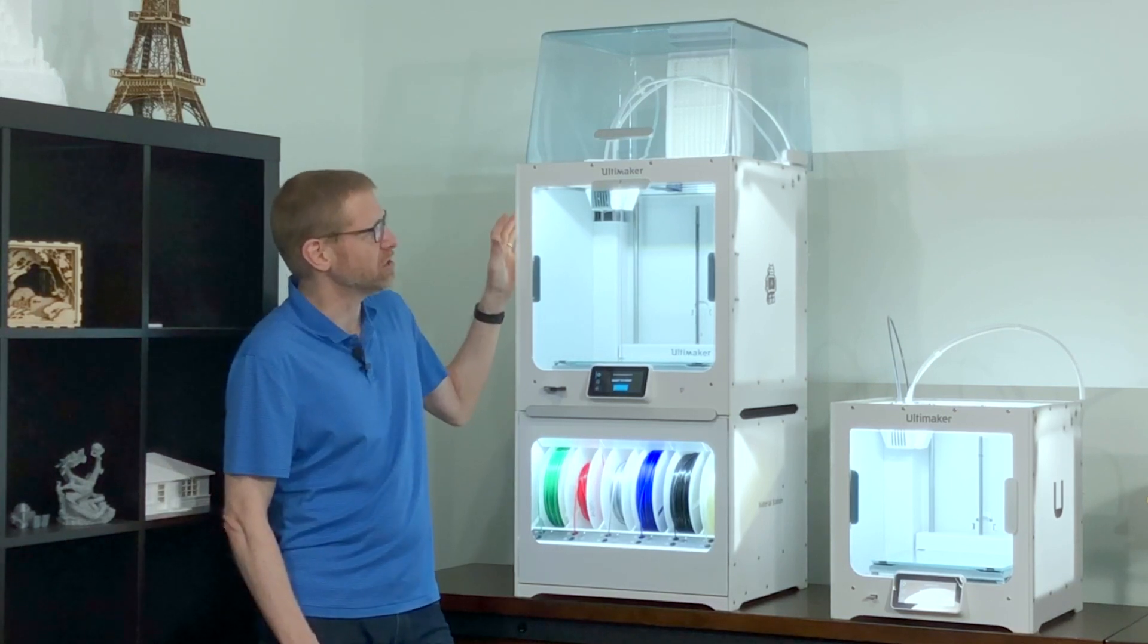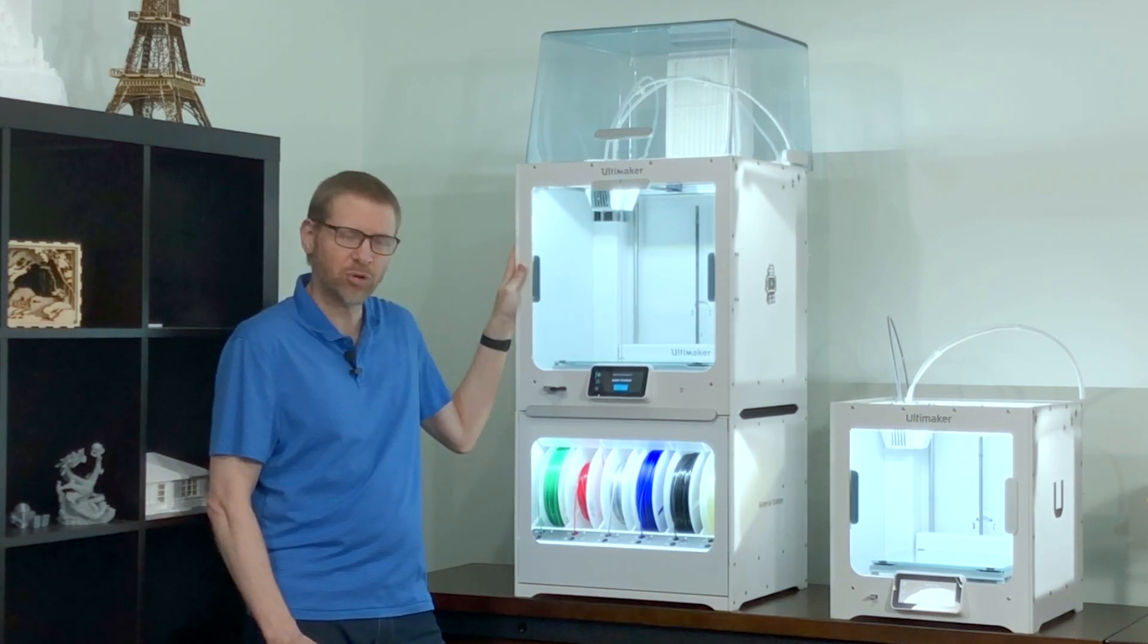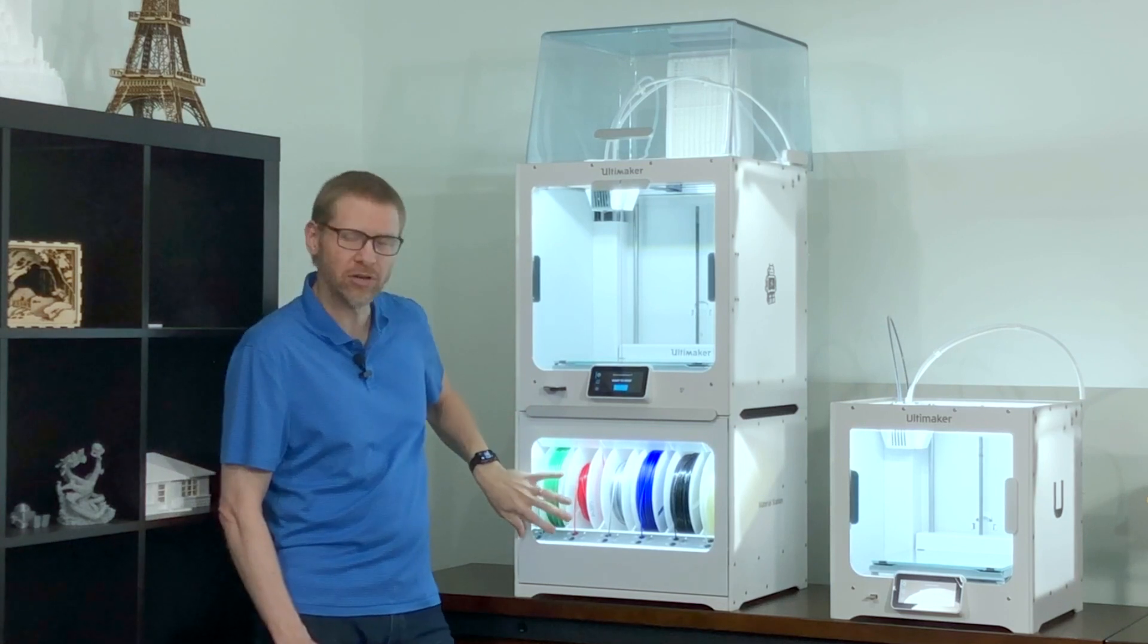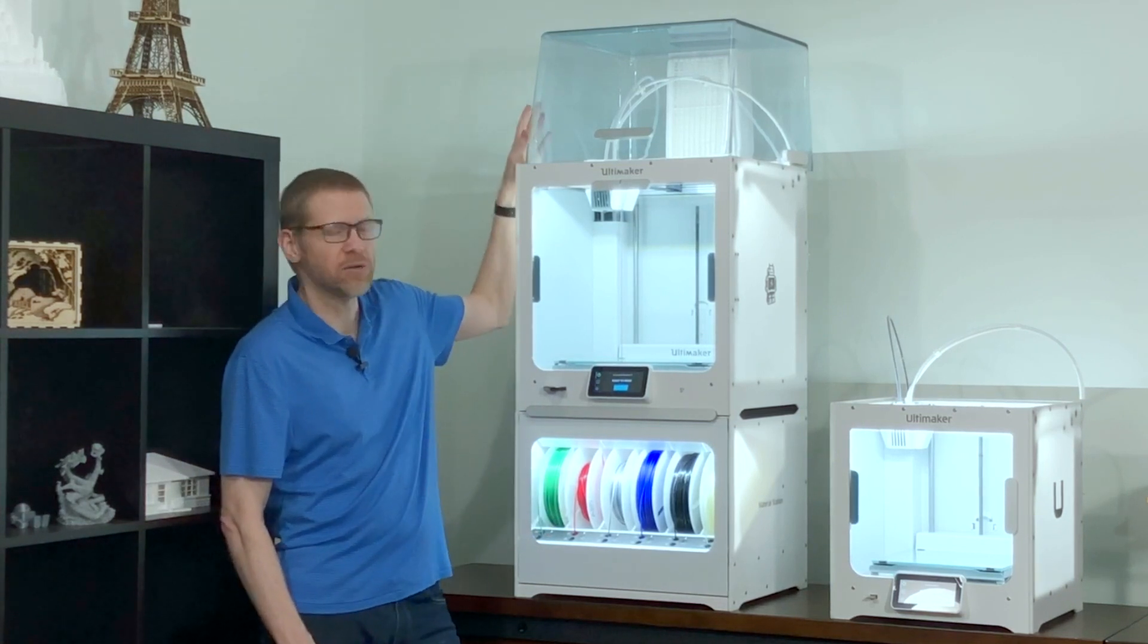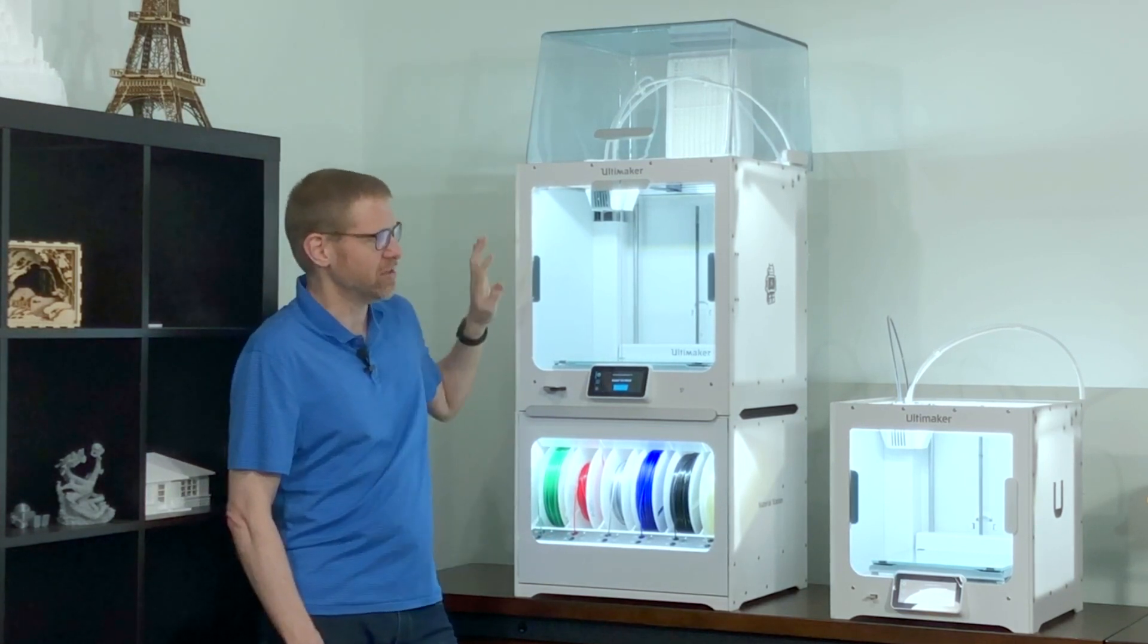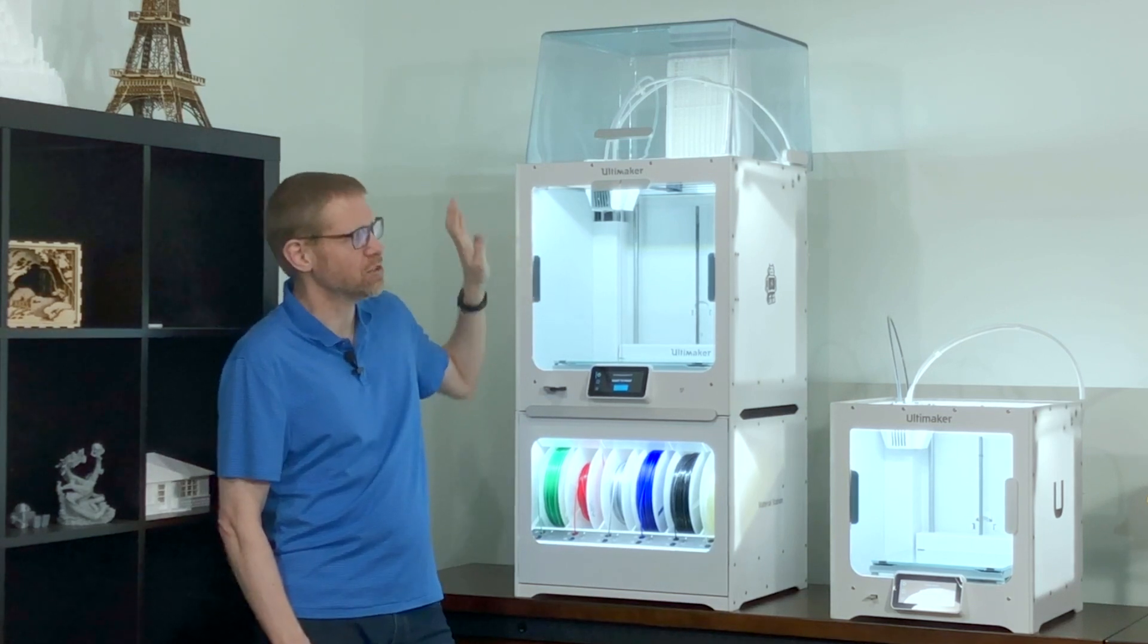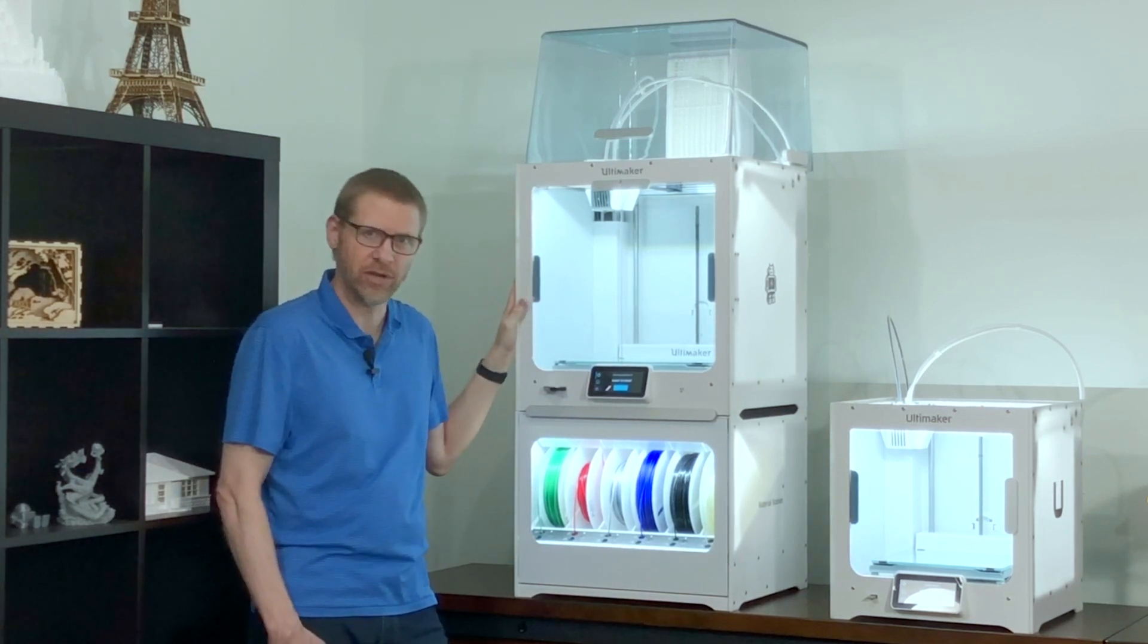The S5 Pro Bundle includes the award-winning Ultimaker S5 printer as well as the all-new Ultimaker Material Station and the Ultimaker Air Manager. This is available as a complete bundle or as an upgrade for users that already own an Ultimaker S5 printer.